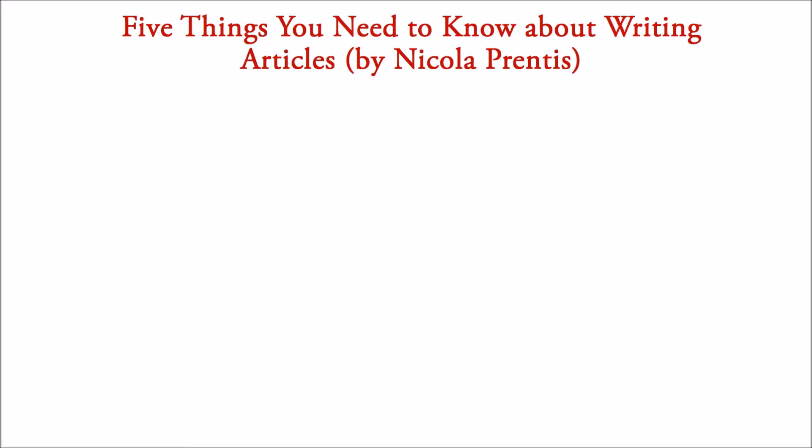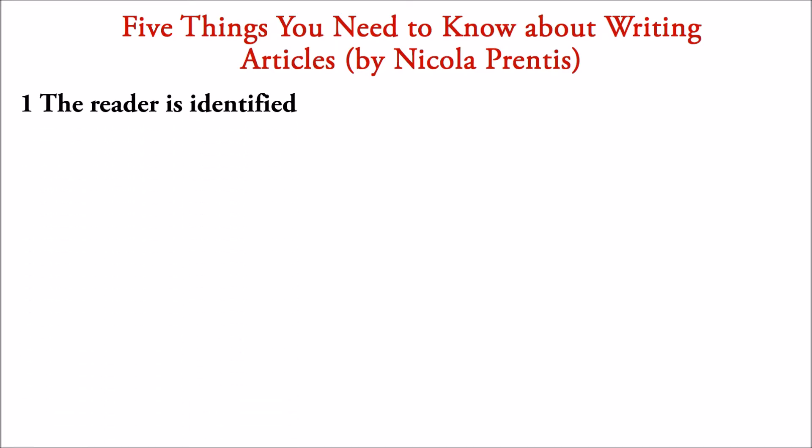Now, five things you need to know about writing articles, by Nicola Prince. This is very useful. Number one: the reader is identified. An article is like a direct conversation with the reader. The exam question might tell you who your readers are — for example, students at school, people living in a town, or people interested in sports, or the subject you choose to write about in our blog. Everything you write must speak to that reader and engage their interest right from the first sentence.